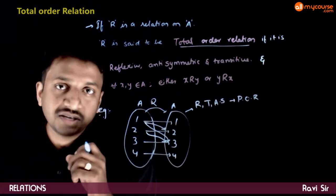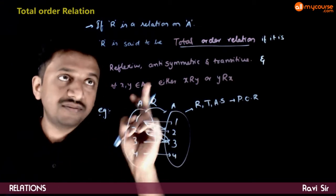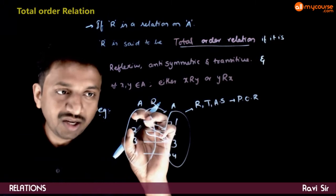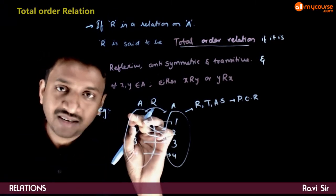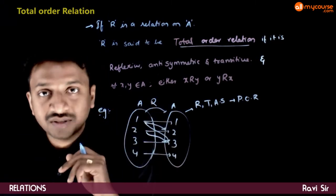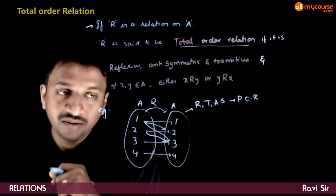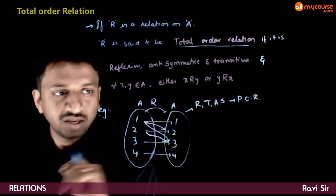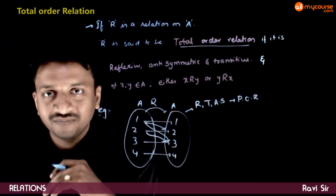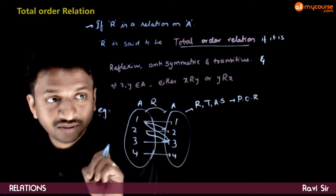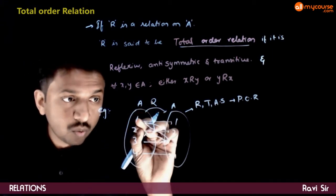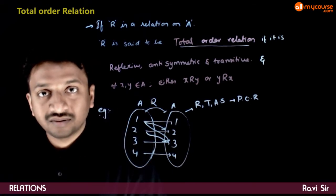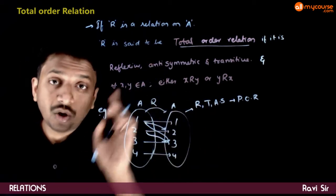Now, what is the extra condition which needs to be valid for this to be a total order relation? For any two elements, either the first element has to be related to the second or the second to the first. Let us take 1 and 2 — 1 is related to 2. Let us take 1 and 3 — 1 is related to 3. Let us take 1 and 4 — 1 is not related to 4 and 4 is not related to 1. So this is not a total order relation.